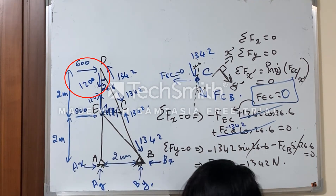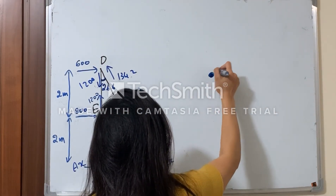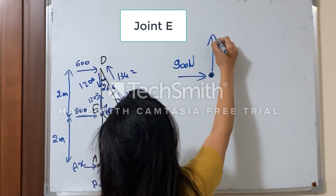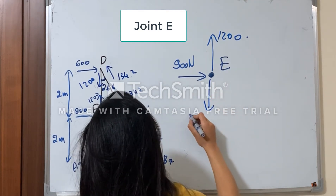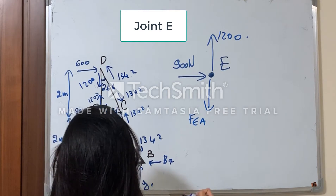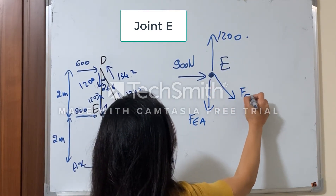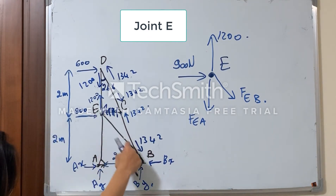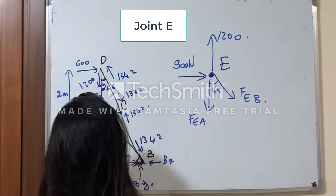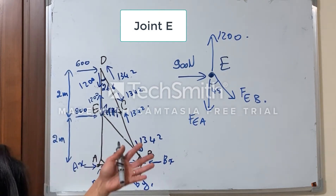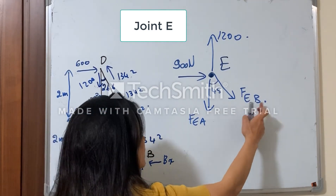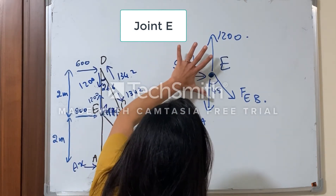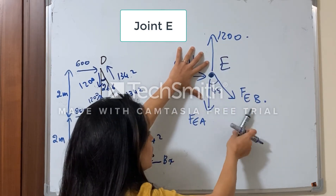Okay, so this is joint E. This is the 900 N external force. I know the EC force is zero. I'll assume FEA is acting outward and FEB is also acting outward. This is a 3-4-5 right triangle, so the angle is 45°. There's no need to include EC since the force inside it is zero. Remember, I cannot say FEB is zero because there is an external force — if the 900 N didn't exist and the other two were collinear, then FEB would be zero, but not here.